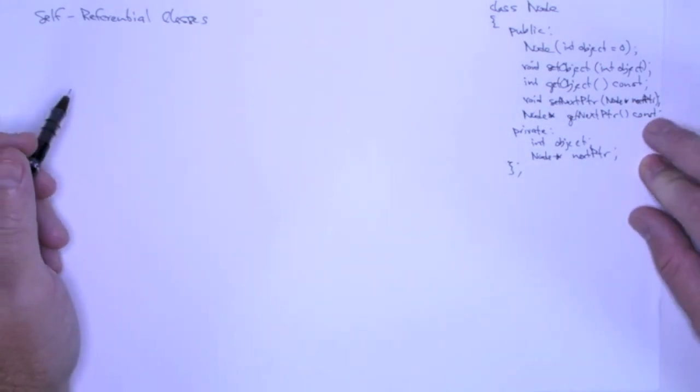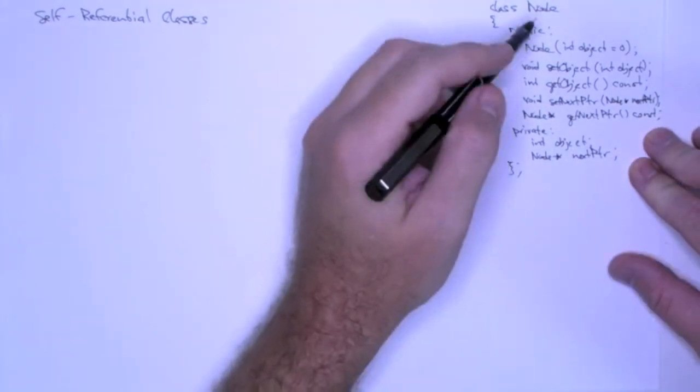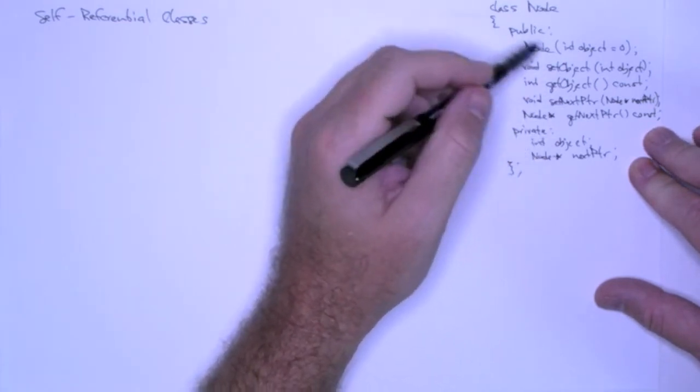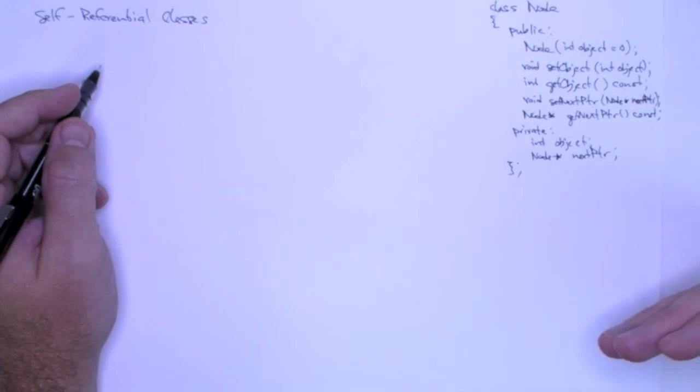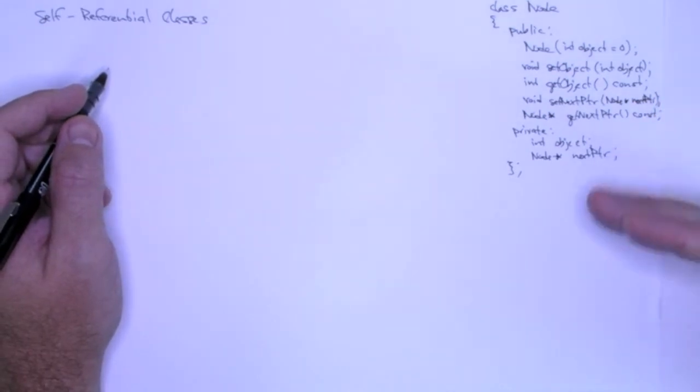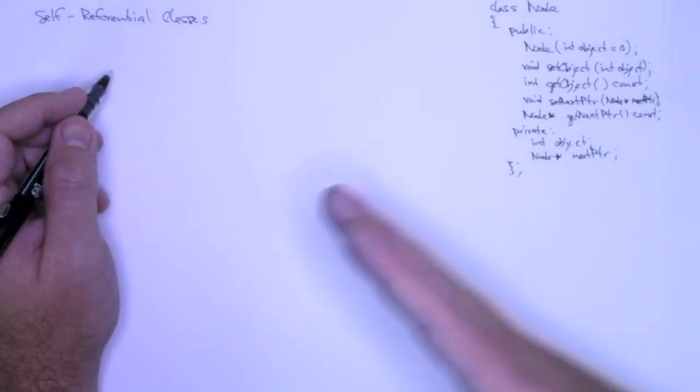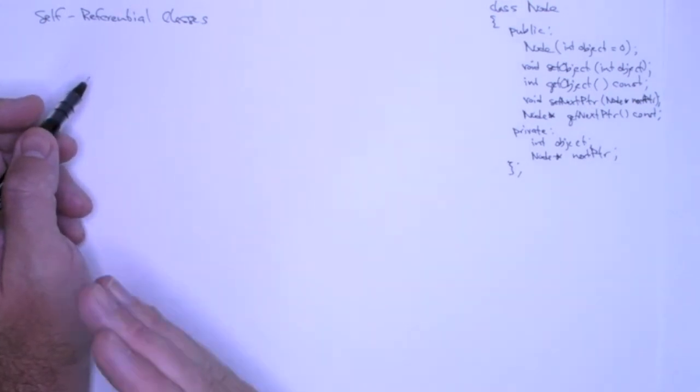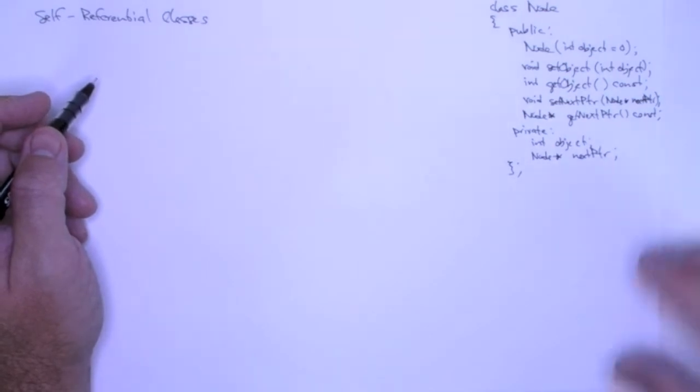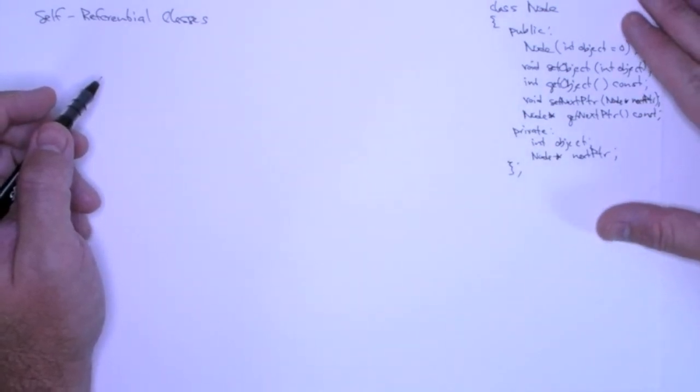Okay, self-referential classes. I've copied the definition of our node class over here and what I'm going to do is create a very simple chain of these nodes. We're going to do it statically using statically allocated nodes first, and then we'll do it all dynamically using new and delete.